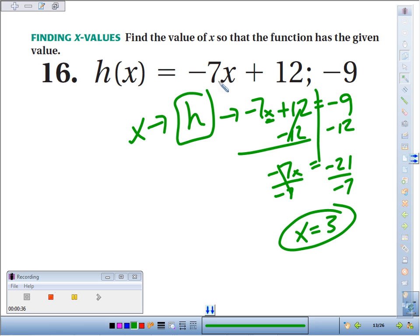If we plug 3 in, we should get negative 9 out. Negative 7 times 3 is negative 21. Negative 21 plus 12 is negative 9.